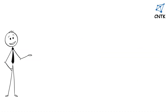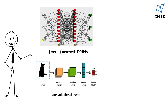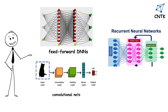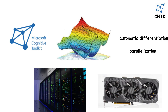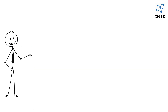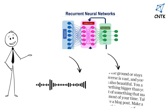CNTK allows users to easily realize and combine established types of neural networks like feed-forward DNNs, convolutional nets, and recurrent networks. It implements stochastic gradient descent learning with automatic differentiation and parallelization across multiple GPUs and servers, and is particularly efficient for recurrent neural networks used in speech and text.